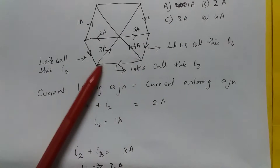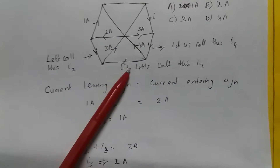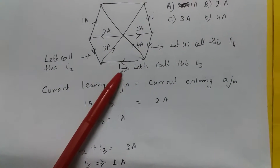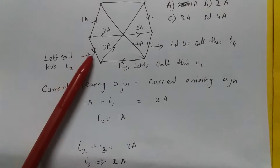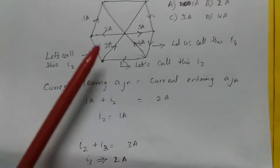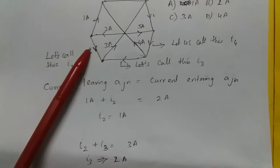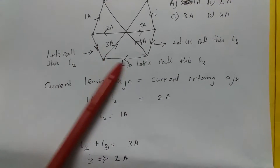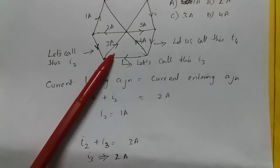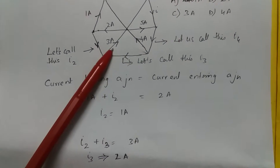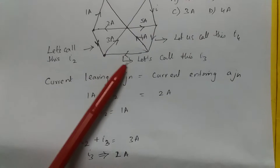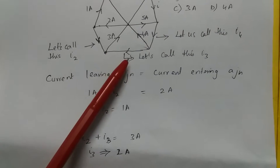Similarly, let's calculate the next value — call it I3. I2 plus I3 should be equal to 3 amps. Since I2 is 1, I3 has to be 2 amps.